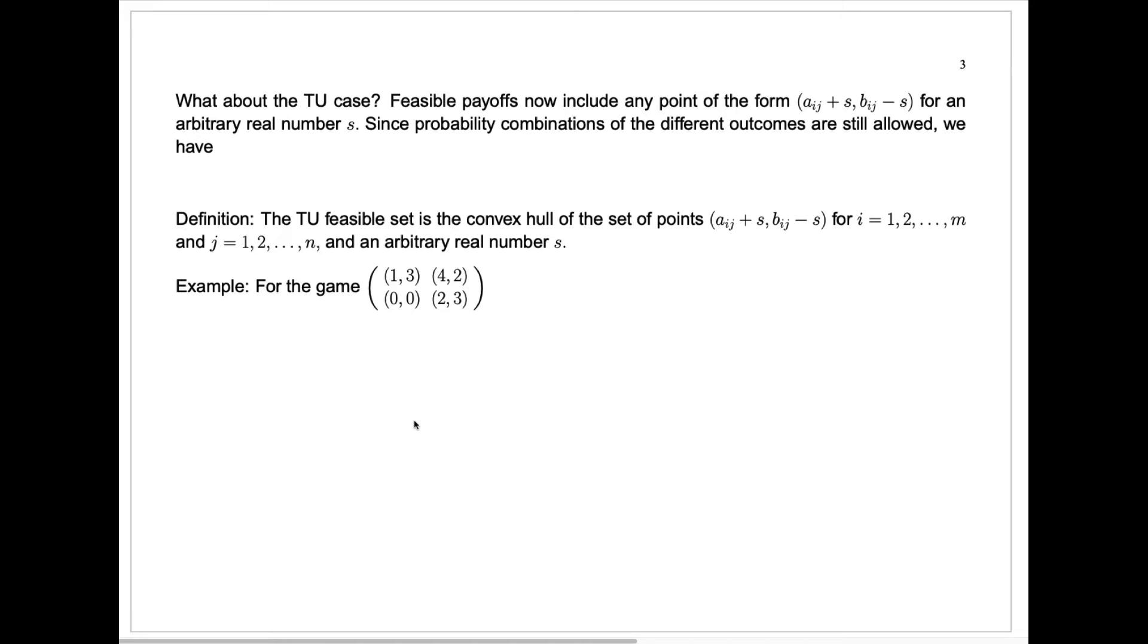What about in the transferable utility case, the TU case? Feasible payouts now include any point in the non-transferable utility case, but it includes more because players can agree to a side payment. This number S is what we call a side payment, so that if there's a point Aij, Bij in the matrix, in the bi-matrix, they could agree to that.